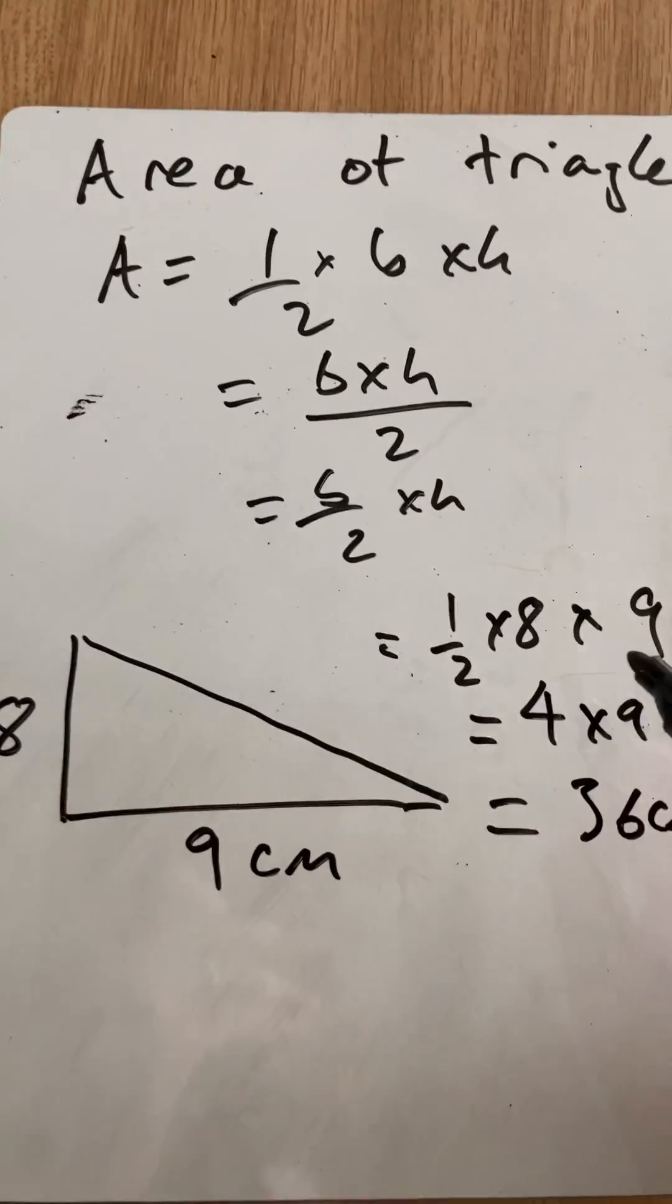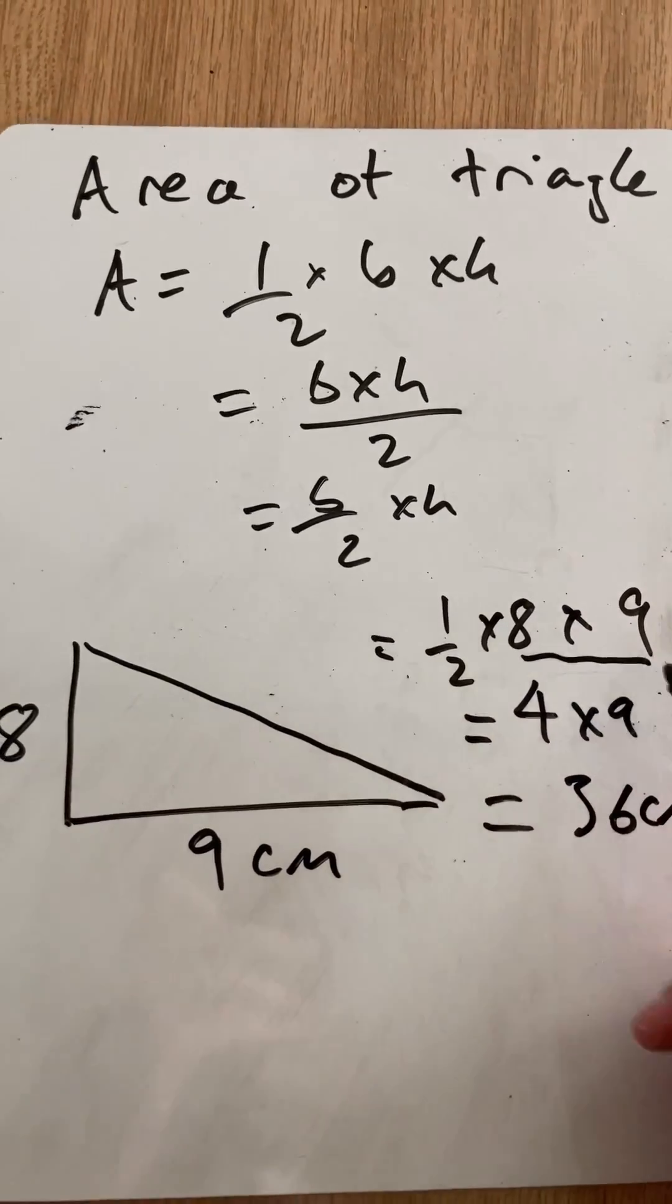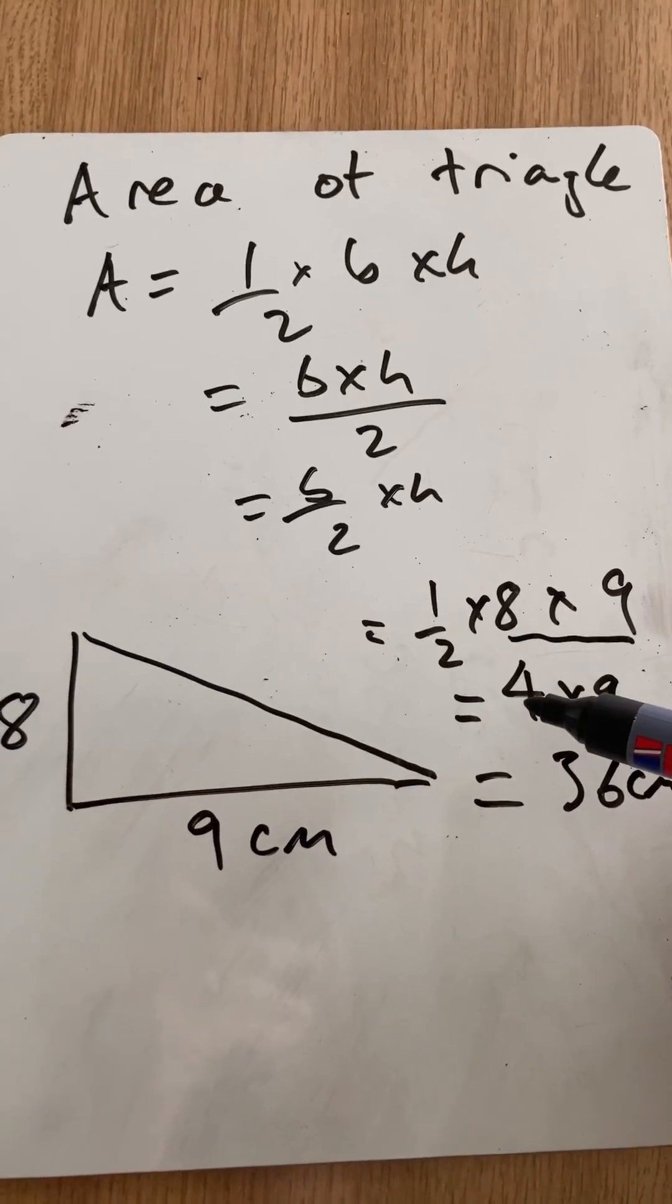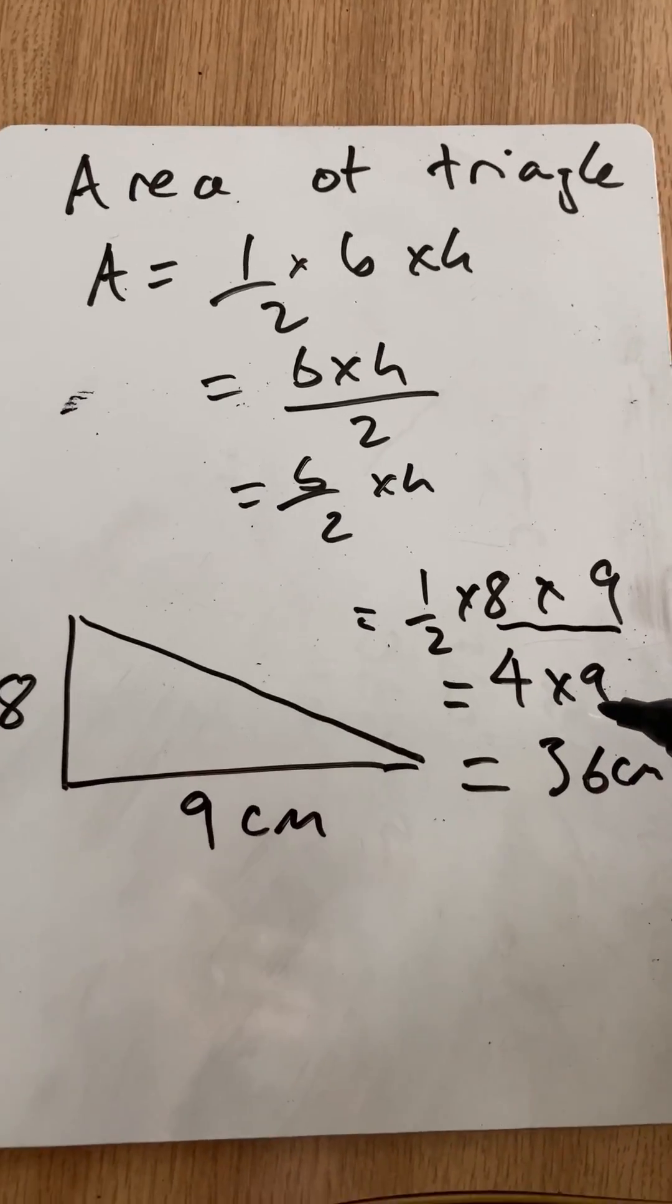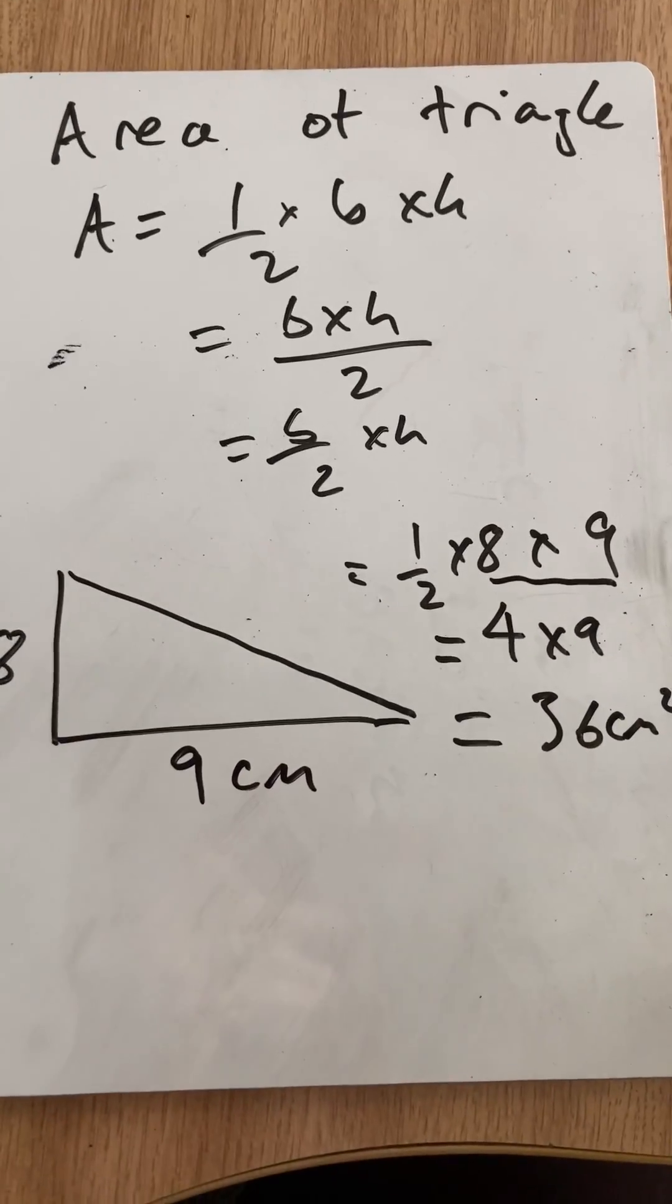So rather than making the numbers big by doing the base times the height, I can do half of one of those and then multiply by the other. Just a different way of doing the area of a triangle. Thanks for watching.